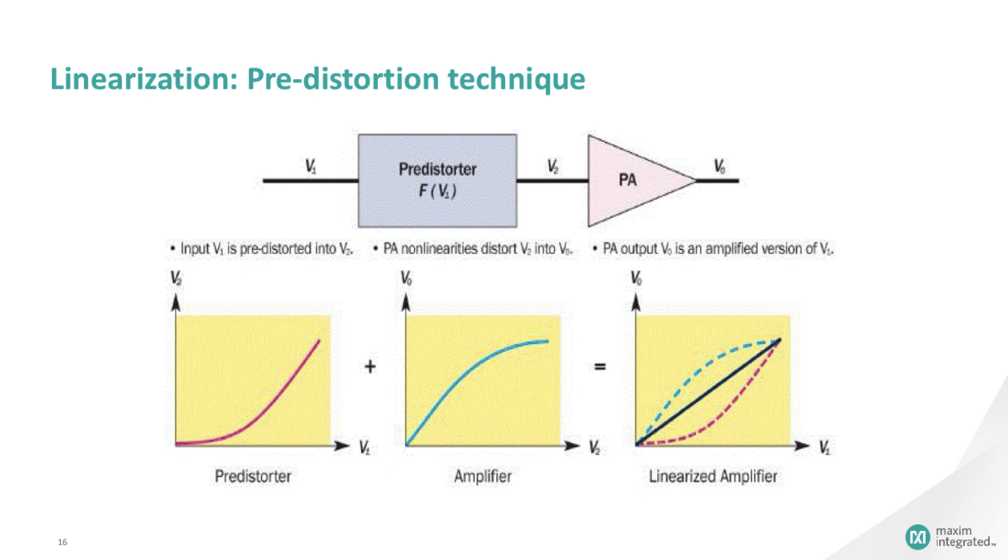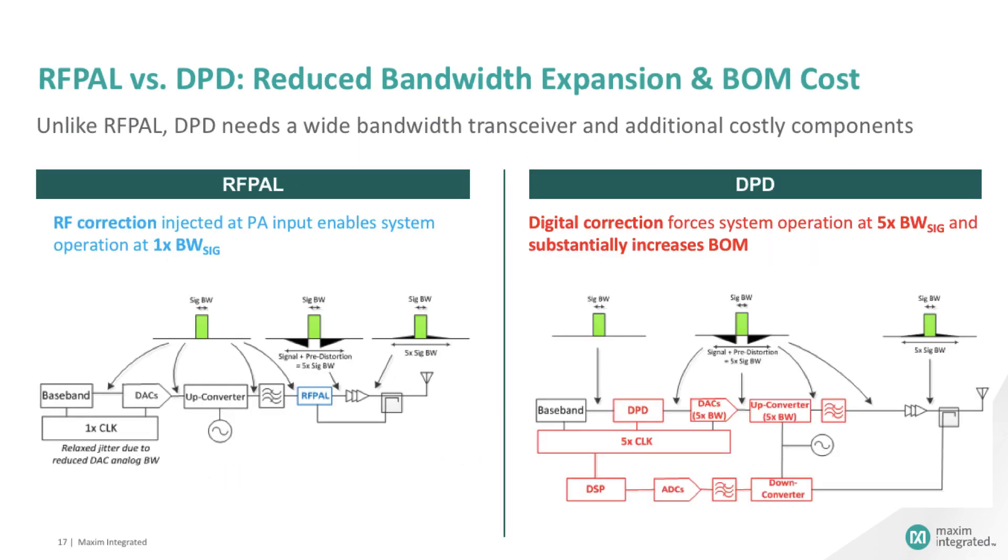Also, the pre-distortion can be made at the RF level, like RF-PAL, at the IF level, or even at the signal data level, which would then be a digital pre-distorter. Maxim opts for the adaptive RF pre-distorter technique.